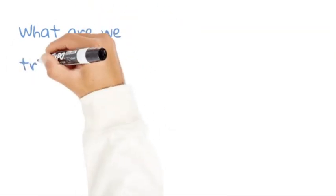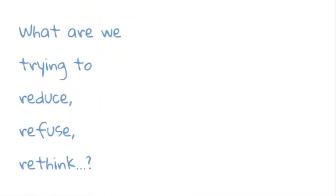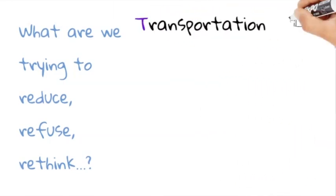So understanding the six R's is a great starting point to sustainable design. But what is it we're exactly trying to reduce or refuse? Or what are we trying to do when we're rethinking or redesigning a product? So first there's transportation. We need to consider the impact on climate change through emissions or the amount of finite supplies of fossil fuels that we're using.